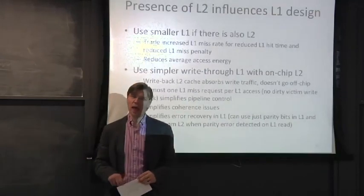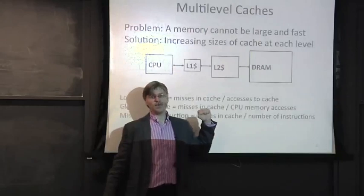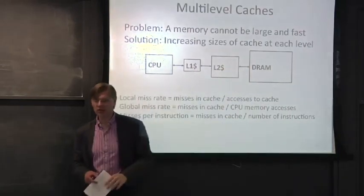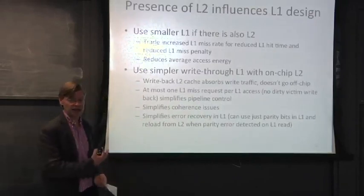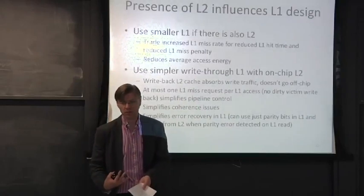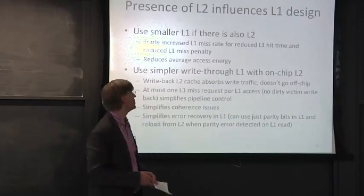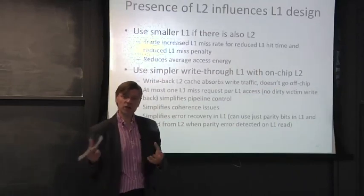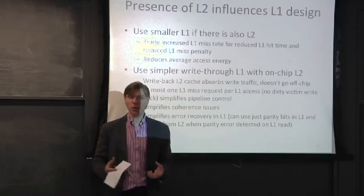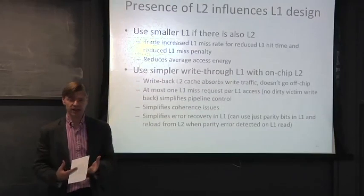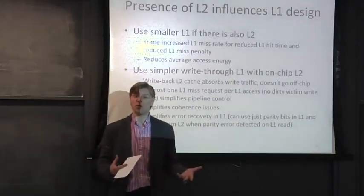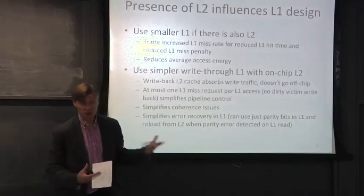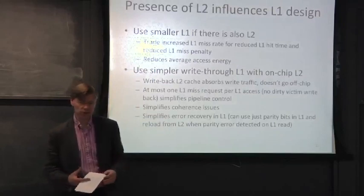Adding a level two cache influences the design of the level one cache — it's not considered in a vacuum. By having a level two cache, you can think about having a smaller level one cache for the same performance. This can help performance even more because you can potentially move the level one cache closer to the CPU or increase its speed since it's now smaller. However, the miss rate from the level one cache will go up because it's smaller.